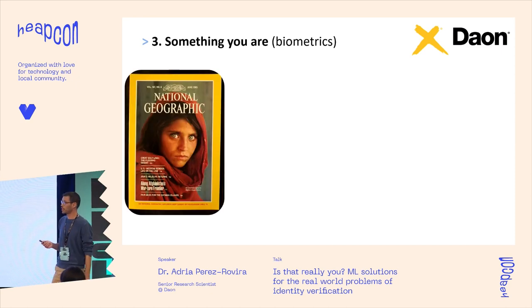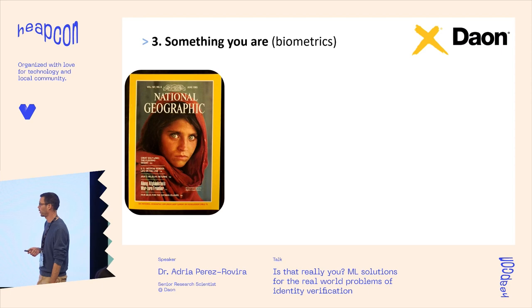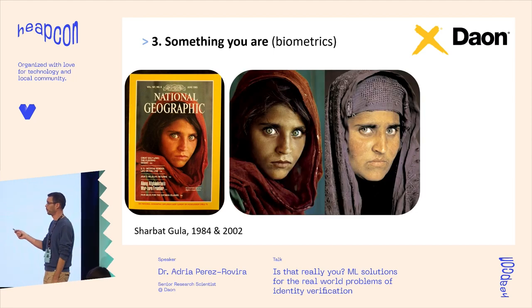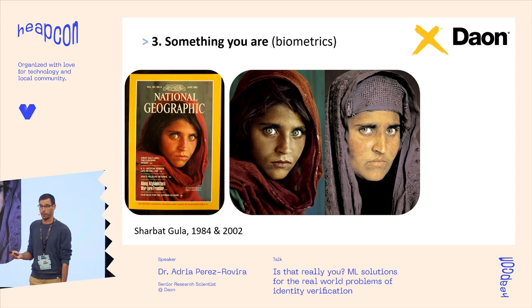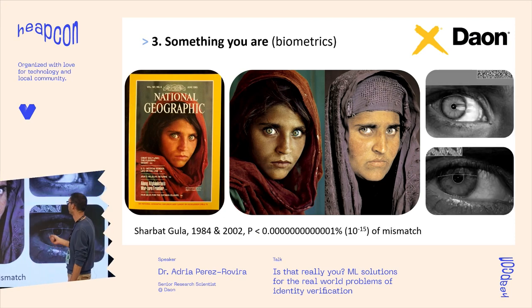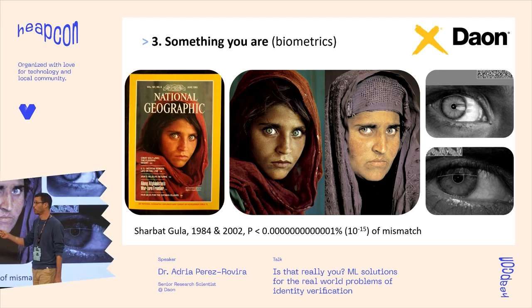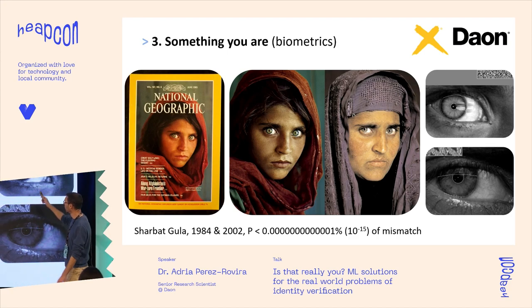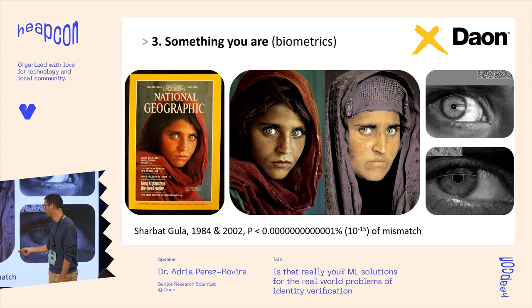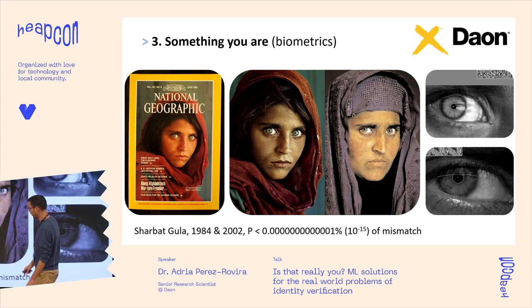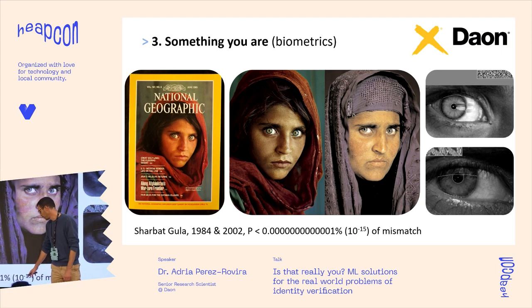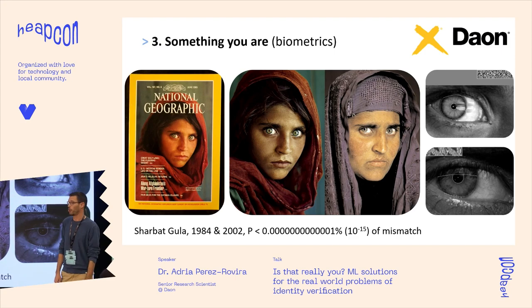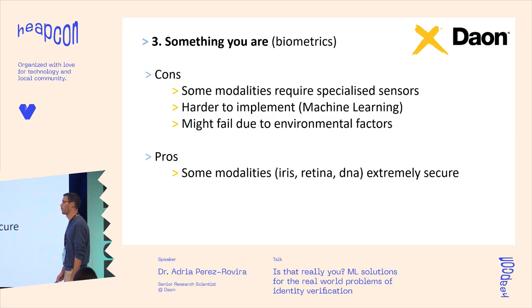Pros: some modalities — especially iris, writing, and DNA — are extremely secure. There's the example of the Afghan Girl photo from National Geographic. They found the same person 18 years later. To prove it was the same person — Sharbat Gula — they took two pictures of the iris from both high-resolution photos, and could guarantee identity with a probability of 10 to the power of minus 15 that it was wrong. That's 10,000 times the number of people who have ever lived on Earth. That's really secure.